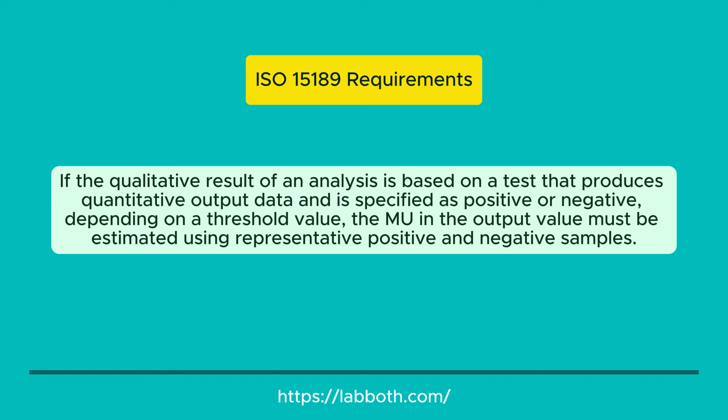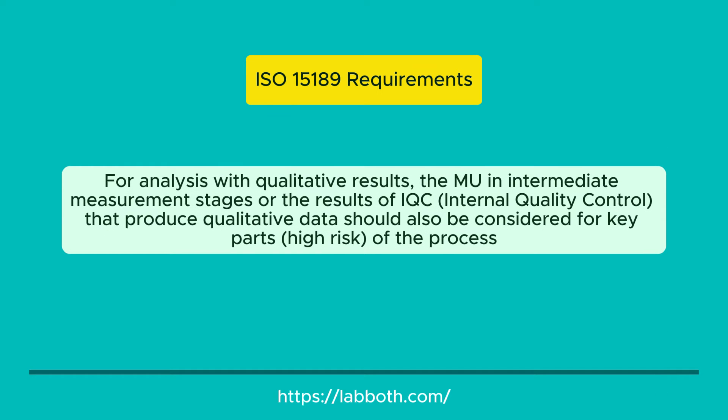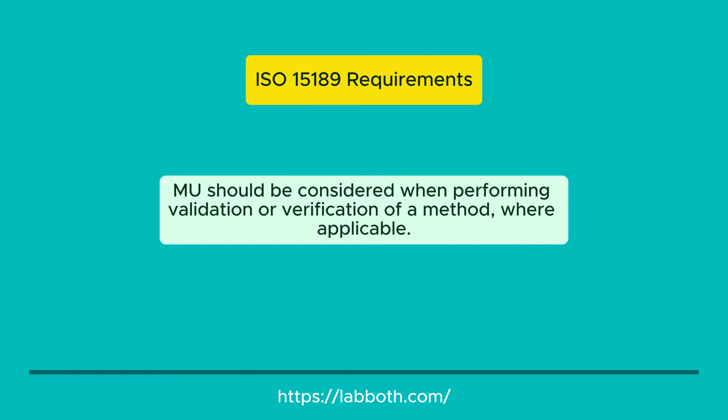When users inquire about MU, the laboratory's response must consider other sources of uncertainty, such as biological variation. If the qualitative result of an analysis is based on a test that produces quantitative output data specified as positive or negative depending on a threshold value, the MU in the output value must be estimated using representative positive and negative samples. For analyses with qualitative results, the MU in intermediate measurement stages or the results of IQC (internal quality control) that produce qualitative data should also be considered for key, high-risk parts of the process. MU should be considered when performing validation or verification of a method, where applicable.